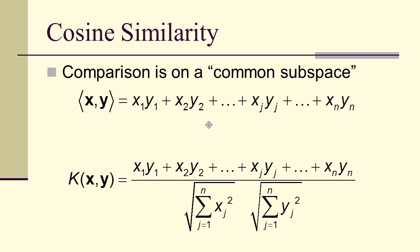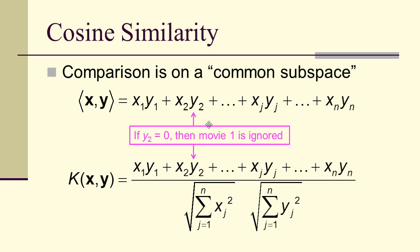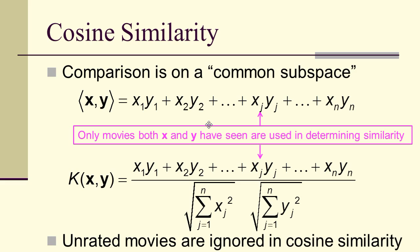Comparison using cosine similarity is on a common subspace. In the dot product — the numerator of the cosine similarity — if x₁ is zero, that first product is zero, so it's as if movie one doesn't even exist. Likewise, if y₂ is zero, movie two is ignored. This means only movies that both x and y have seen are used in determining similarity, and in the denominators, movies that one or the other hasn't seen also play no role. This makes it an excellent measure for recommender systems.